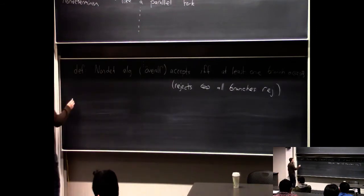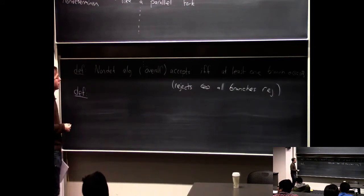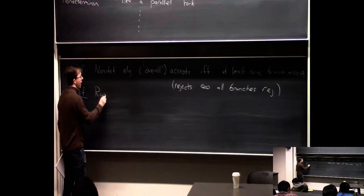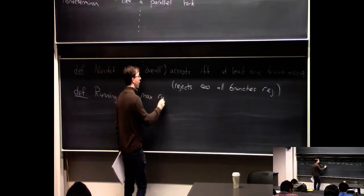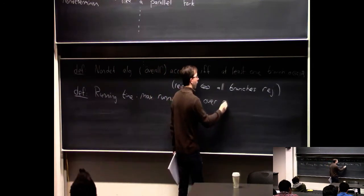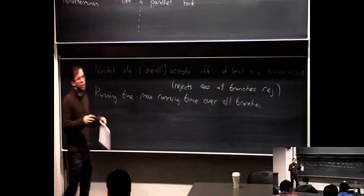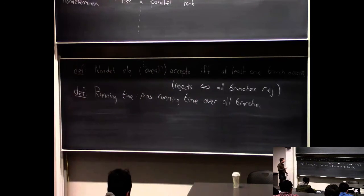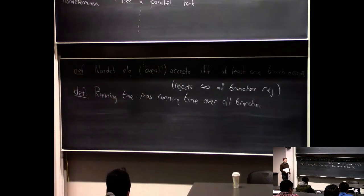We also have to talk about what running time means for this new model. The running time is defined to be the max running time over all branches. So if you want to say this non-deterministic algorithm runs in n squared steps, then it must be that no matter which path it follows on a 'go to both,' no matter what happens on every branch, it should take at most n squared steps.